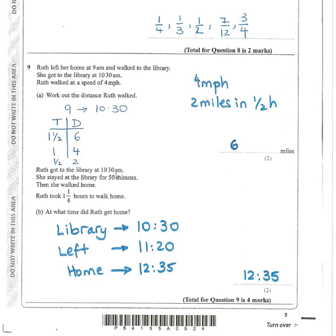Ruth stayed at the library for 50 minutes, so adding 50 minutes to 10:30 gives 11:20. A mental trick: add an hour and take off 10 minutes. Then she walked home taking 1 and a quarter hours, so adding 1 hour 15 minutes to 11:20 gives an arrival time of 12:35.